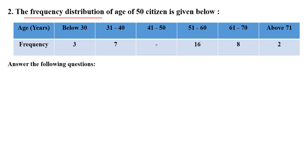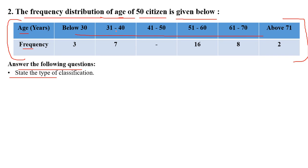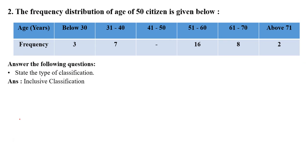The second example: the frequency distribution of age of 50 citizens is given below. The age groups are: below 30, 31 to 40, 41 to 50, 51 to 60, 61 to 70, and above 71. Observe the table and answer the following questions. Question 1: state the type of classification. Looking at 31 to 40, 41 to 50 — this is inclusive classification.